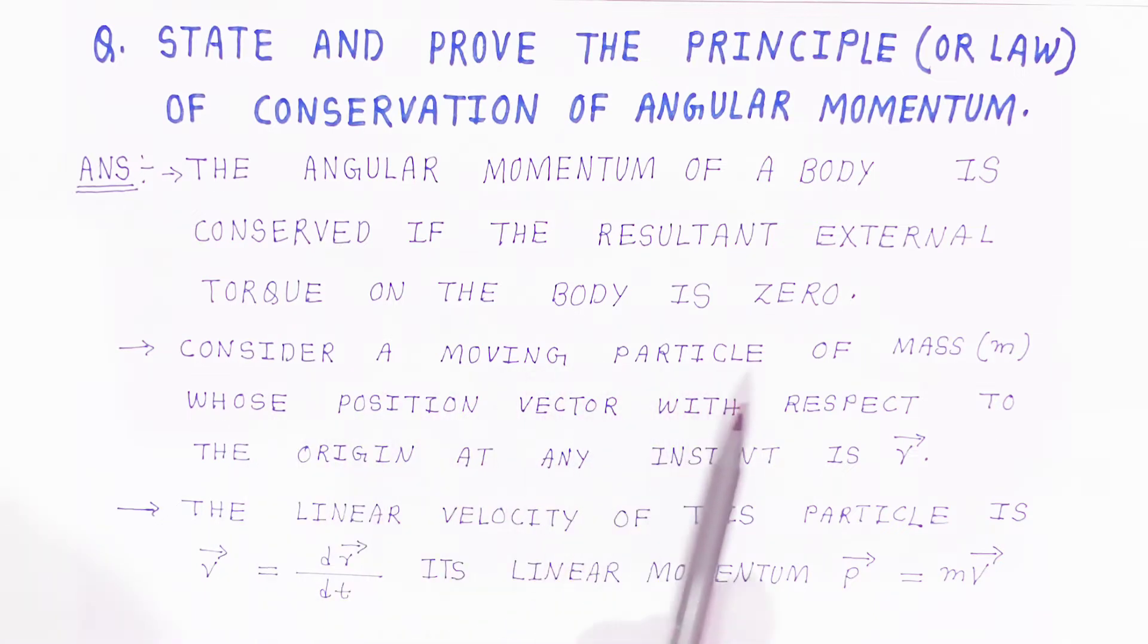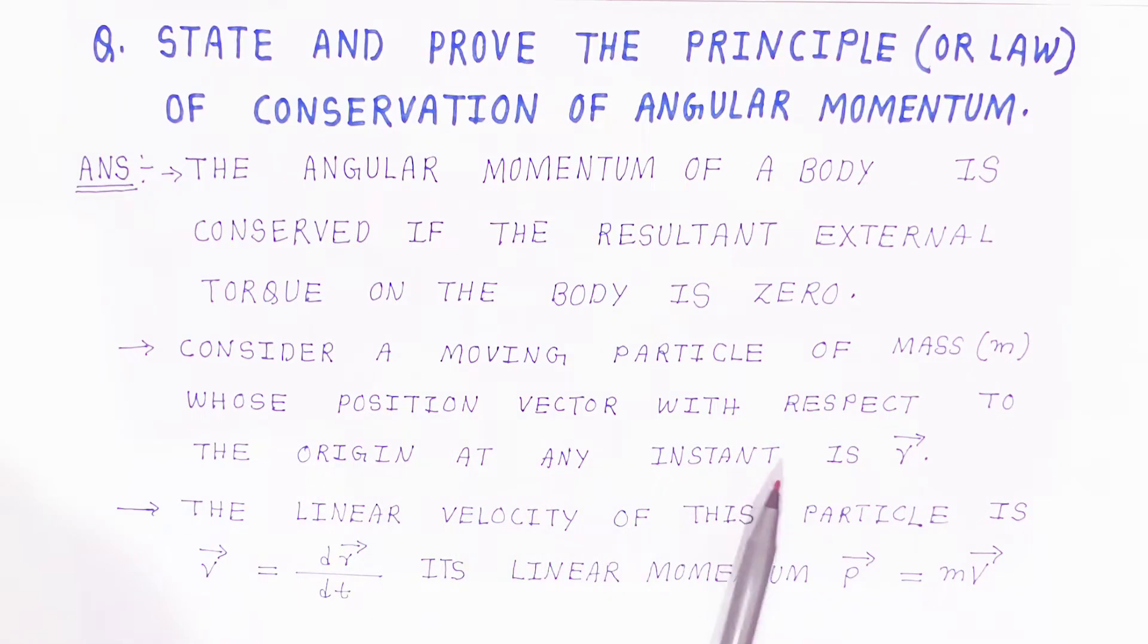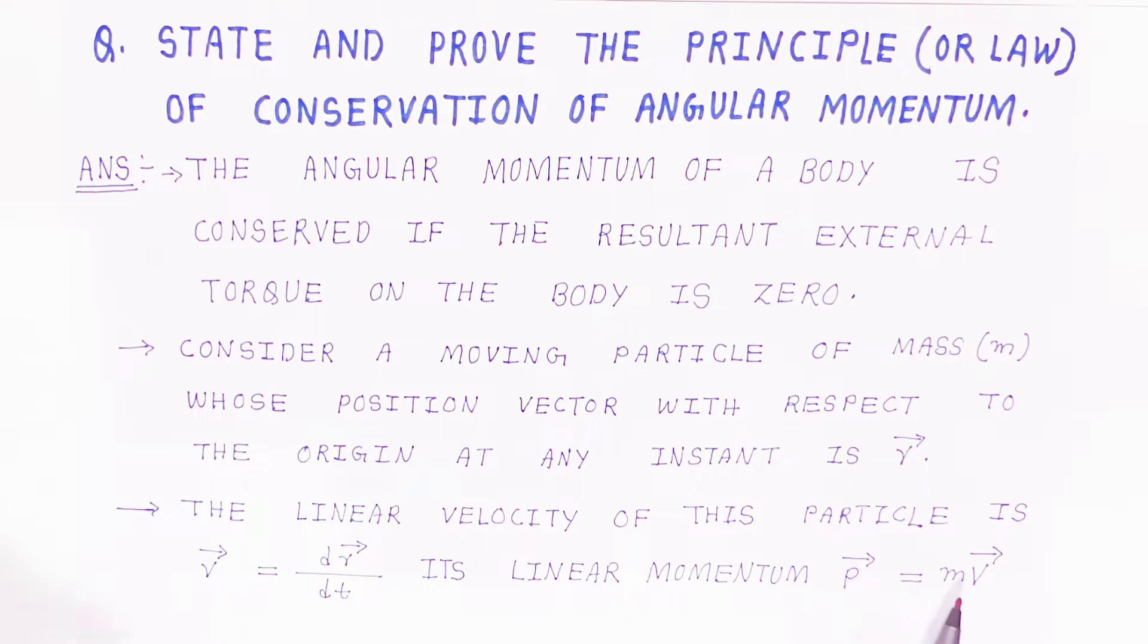Consider a moving particle of mass m whose position vector with respect to the origin at any instant is r bar. The linear velocity of this particle is given by v bar equals dr bar upon dt. Its linear momentum will be p bar equals m v bar.